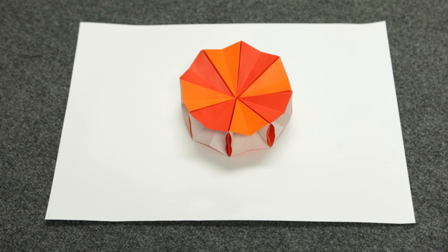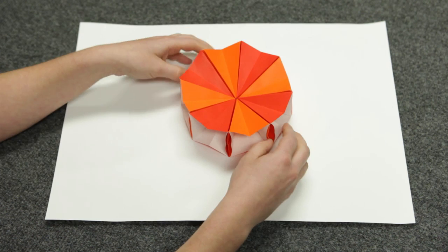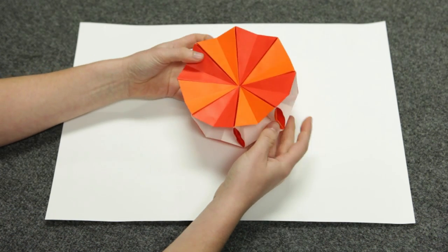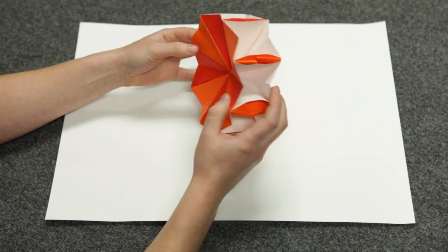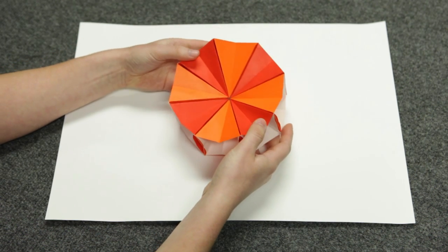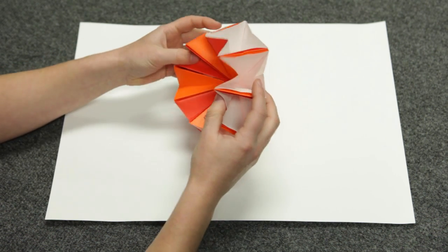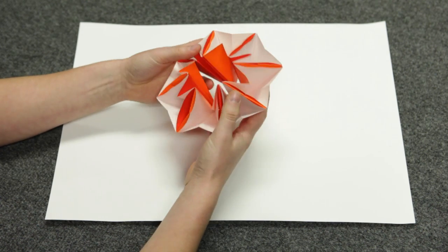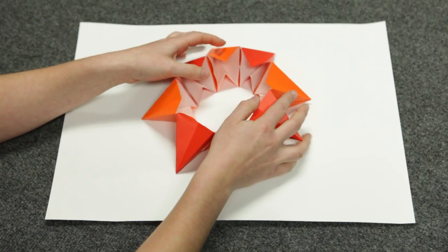It's made out of eight separate square pieces of paper and it can have two different shapes, either closed or open depending on how it's folded. Here it is closed and here it is open.